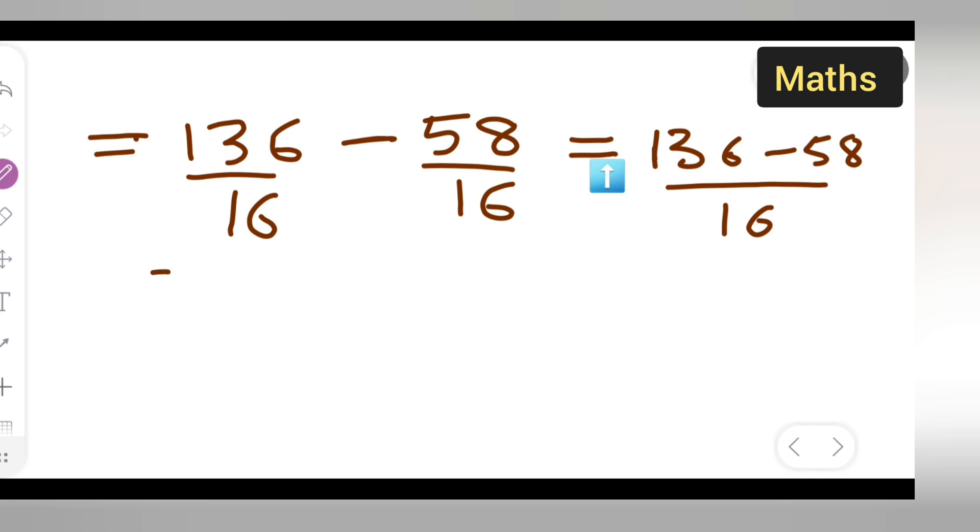So 136 minus 58 upon 16. Subtract it and see what answer you get. 136 minus 58 gives 78 upon 16.